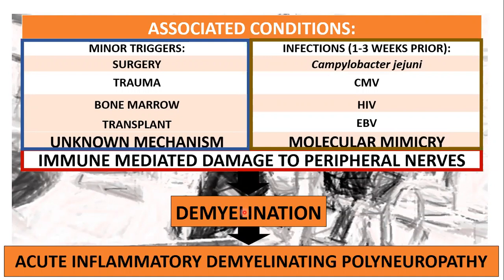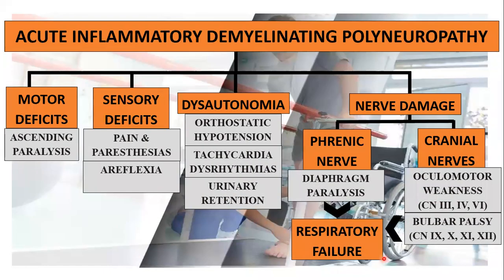This would lead to demyelination and trigger acute inflammatory demyelinating polyneuropathy. This produces motor deficits classic to GBS — the ascending paralysis starting from the legs — as well as sensory deficits of pain and paresthesias, and universal areflexia. There could also be dysautonomia, which is life-threatening, including orthostatic hypotension, tachycardia, dysrhythmias, and even urinary retention.